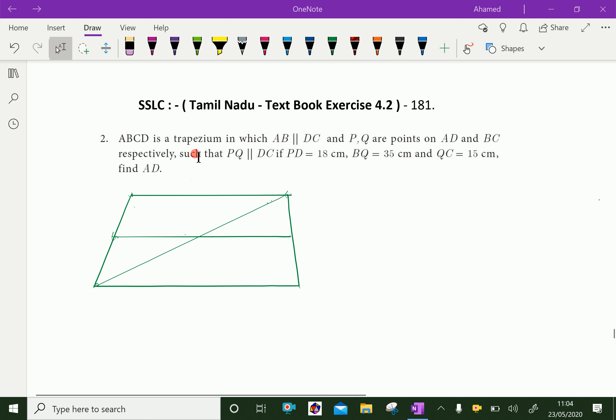ABCD is a trapezium in which AB parallel to DC and P and Q are points on AD and BC respectively, such that PQ is parallel to DC. If PD equal to 18 cm, BQ equal to 35 cm and QC equal to 15 cm, find AD.